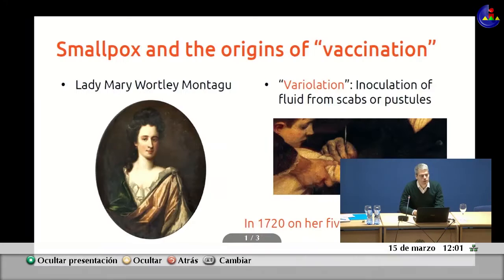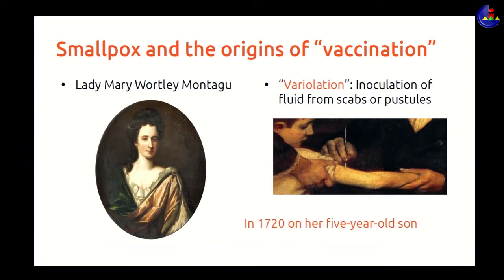This is the story of Lady Mary Worley. She was an English aristocrat who suffered from smallpox and almost died, becoming obsessed with the disease. She is famous because she married the British ambassador in Constantinople, where she discovered a widespread technique called variolation borrowed from India. The idea was to extract liquid from scabs of smallpox sufferers, dry it out, and introduce the powder into scratches on the skin of healthy people.